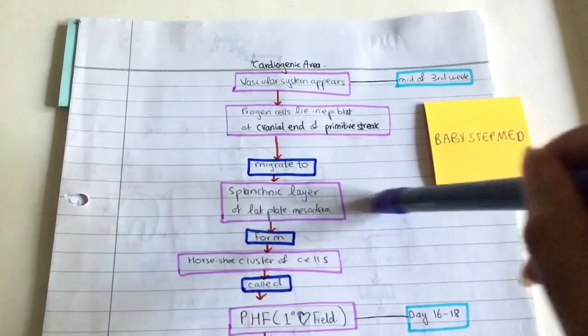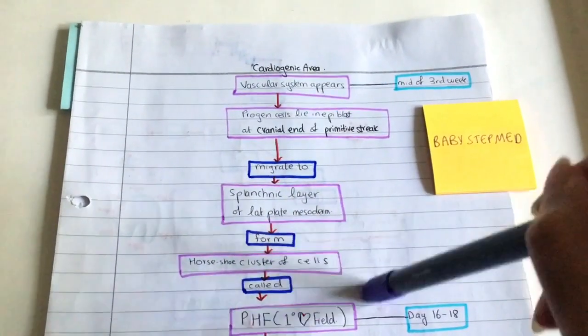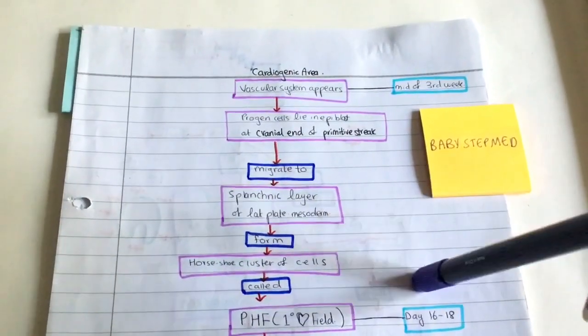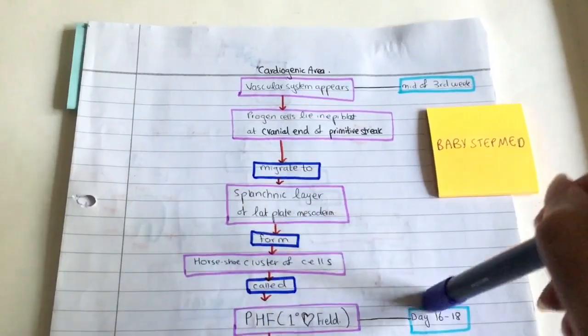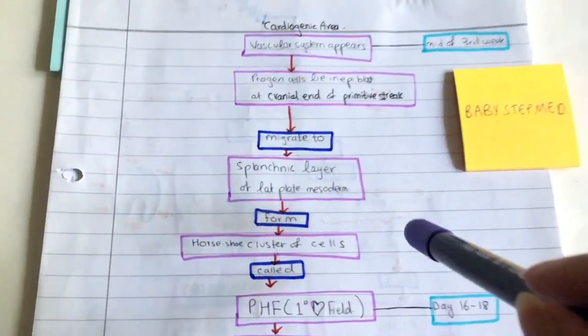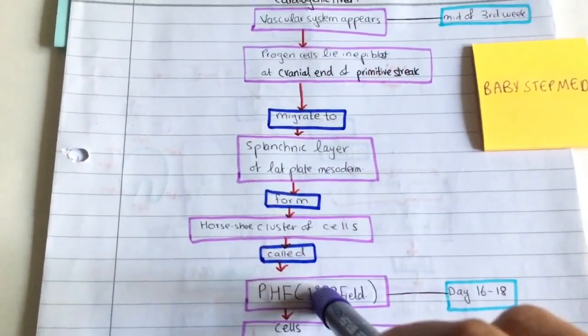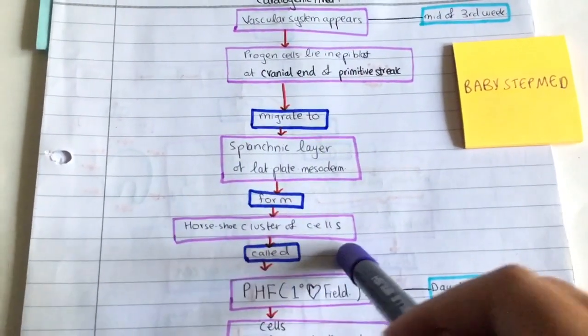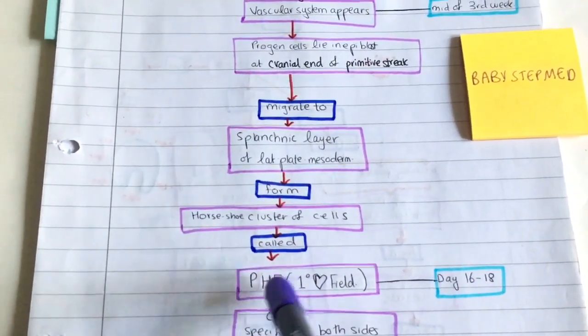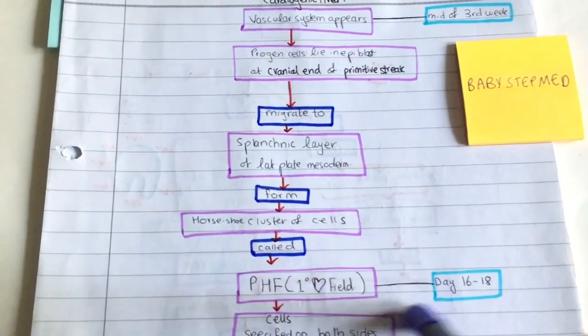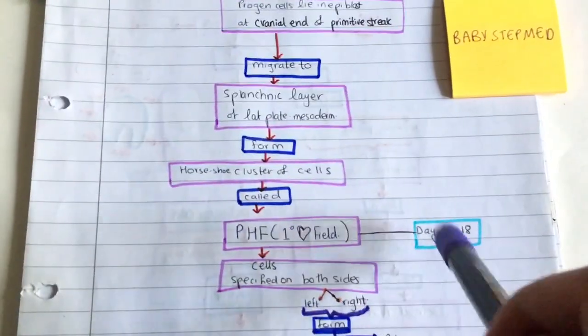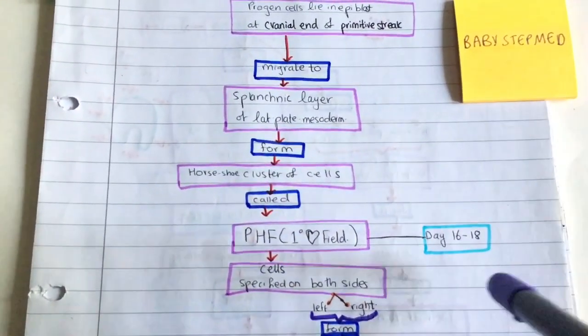Here they form this heart, this horseshoe cluster of cells. What does a horseshoe look like? It looks like a U. So that's what's happening. This horseshoe cluster we call the primary heart field, and this is formed at day 16 to 18.